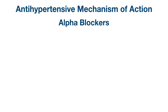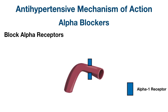Moving on to alpha blockers, the mechanism of action is self-explanatory by their name: they block alpha receptors, making them alpha receptor antagonists. Alpha blockers lower blood pressure primarily by blocking the alpha-1 receptors on blood vessels.